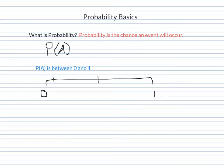Closer to 0, it is unlikely, and closer to 1, your probability is likely. Your probability cannot be negative and it also cannot be greater than 1. Think of it as a percentage. Your percentage has to be from 0% to 100%.